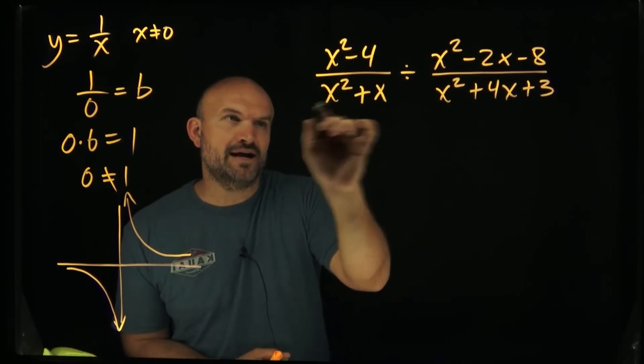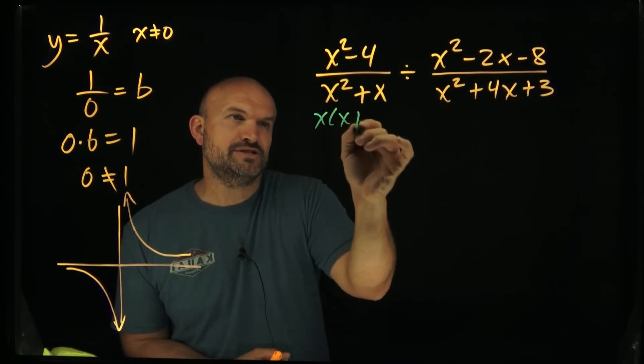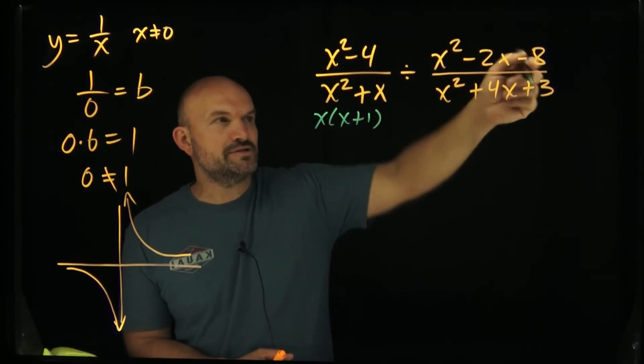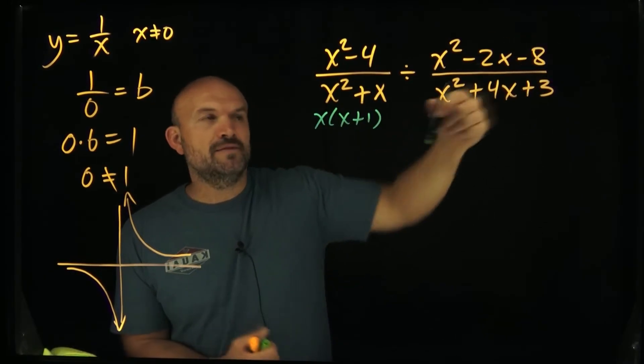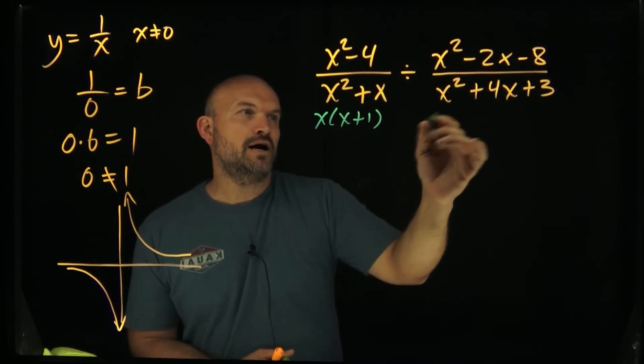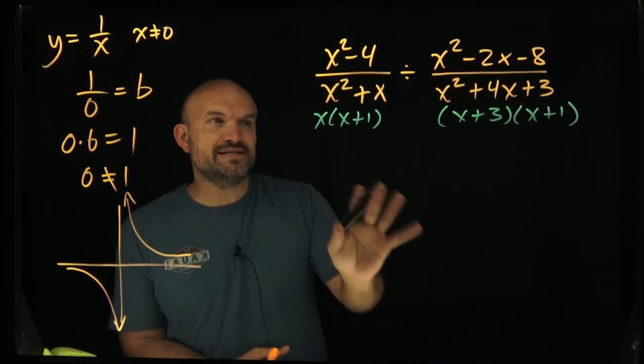So first thing we do is say alright, I can factor out an x in this case that's gonna be my GCS. Over here that's gonna be a quadratic trinomial, so what two numbers multiply to give me 3 and add to give me 4, that's gonna be x + 3 and x + 1.